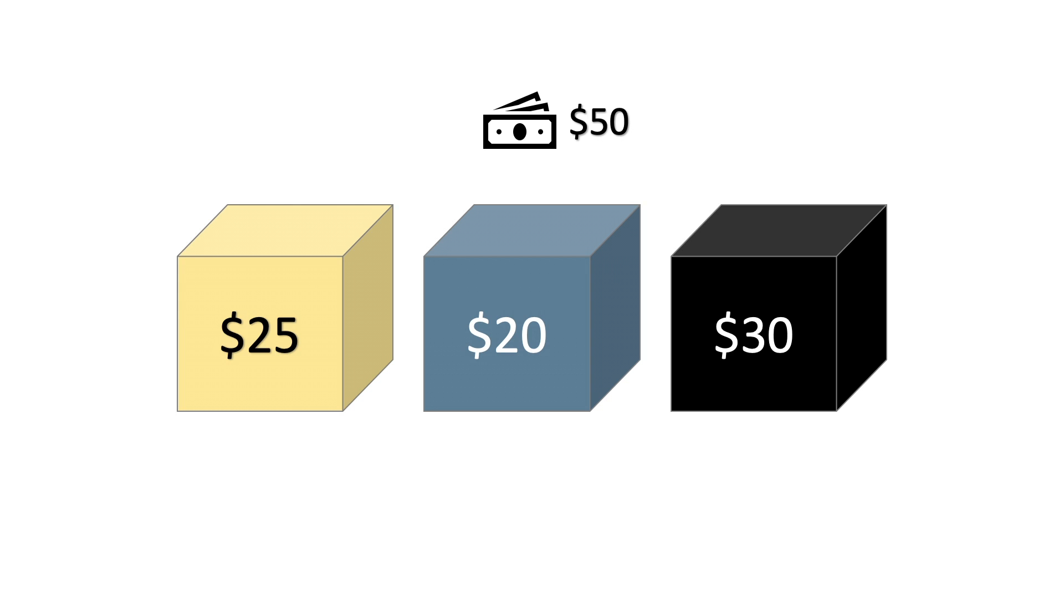We can formulate this problem with a QUBO equation. We have a binary variable for each box which indicates whether we're going to buy the box or not. A 1 indicates that we'll buy the box while a 0 indicates that we won't buy it. Now, we can look at how close to our target value of 50 our total box purchase cost might be. This can be modeled by looking at the expression 50 minus 25x1 minus 20x2 minus 30x3.